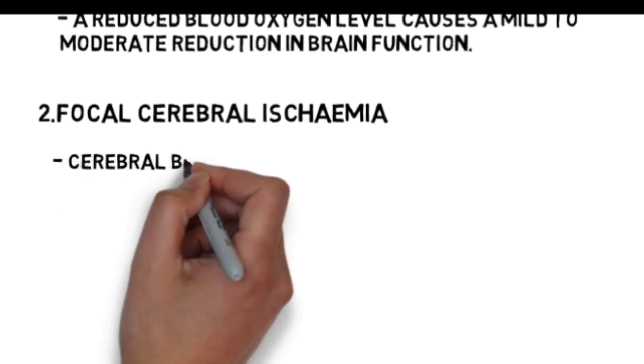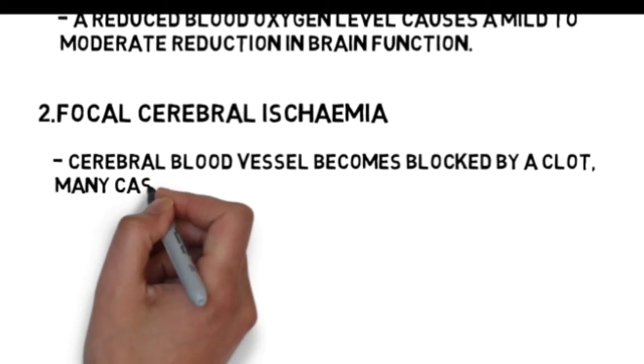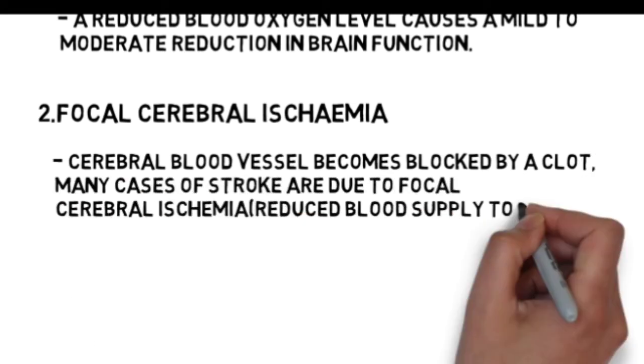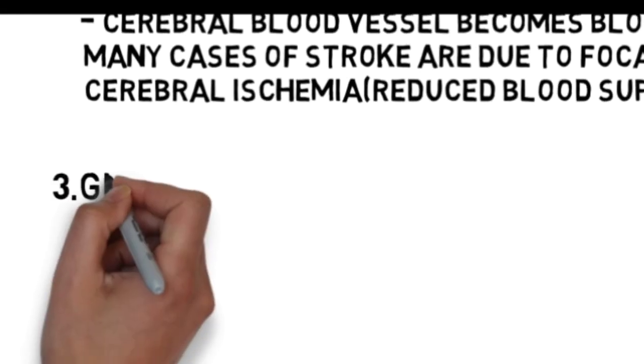Focal Cerebral Ischemia is the condition in which cerebral blood vessels become blocked by a clot. Many cases of stroke are due to focal cerebral ischemia, which is reduced supply of blood to the brain.